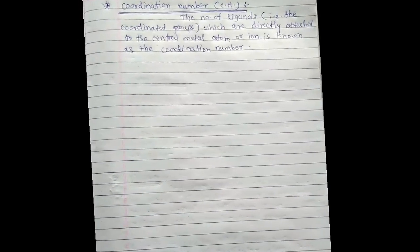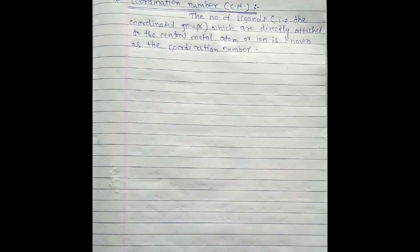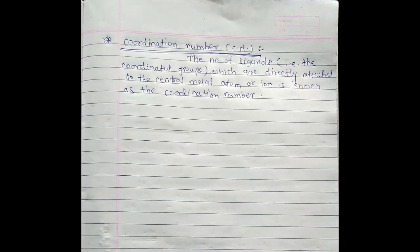Coordination number (CN). The number of ligands, that is the coordinated group, which are directly attached to the central metal atom or ion is known as coordination number. These terms are involved in coordination chemistry and are very useful. Thank you for watching.